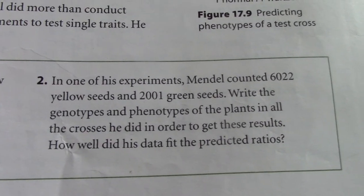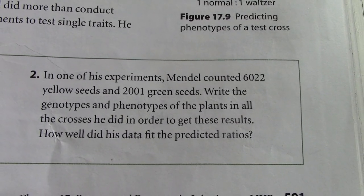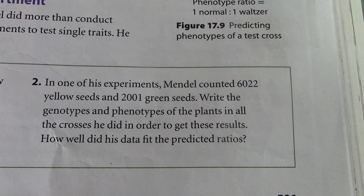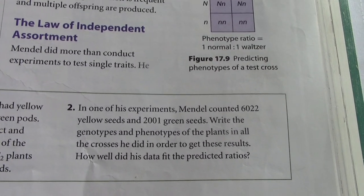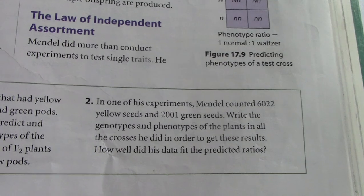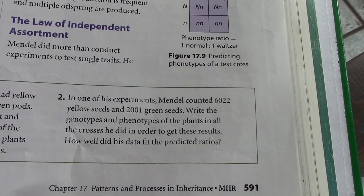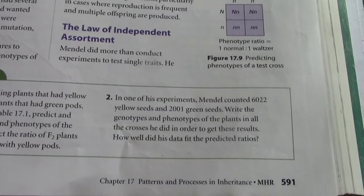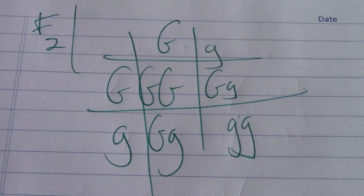So two is the same thing. It says, in one of his experiments, Mendel counted 6,022 yellow seeds and 2,001 green seeds. Write the genotypes and phenotypes of the plants and all the crosses he did in order to get these results. So it's the same thing. You have a three to one dominant to recessive trait. Now these are seeds, not pods, right? Yellow seeds are dominant to green seeds, whereas green pods are dominant to yellow pods. So there's about 8,000 individuals and 75% of them all have the dominant phenotype. So you would show the same thing, right? True breeding P generation, F1s all heterozygous and two heterozygous bred together will give you this Punnett square for question number two.